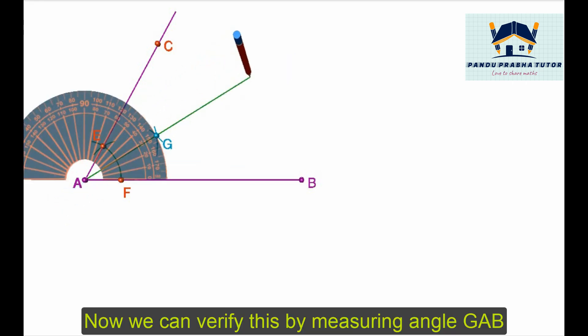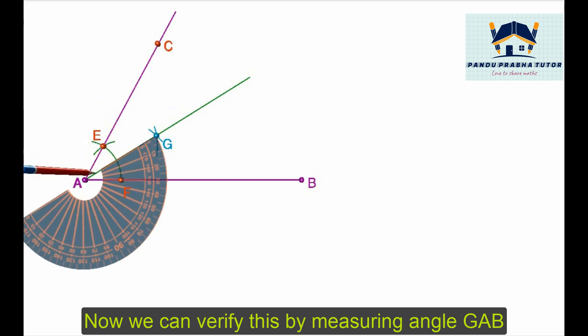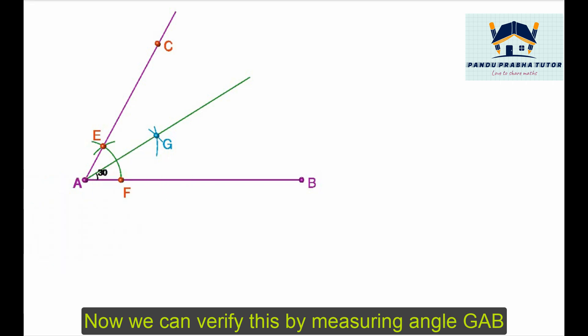Now measure the angle GAB, which is exactly 30 degrees. GAB is the required angle.